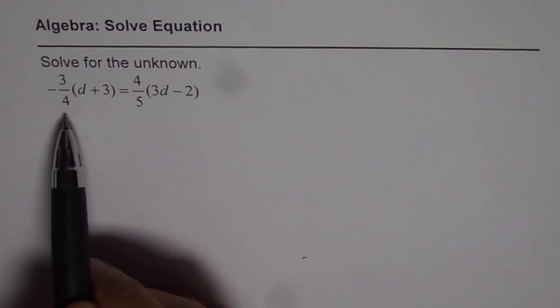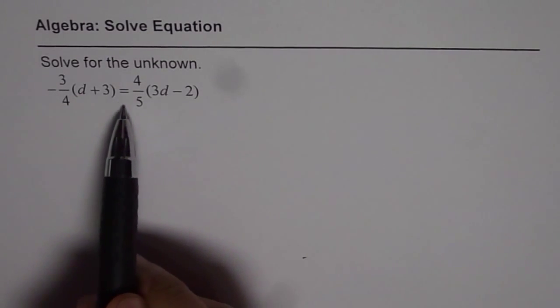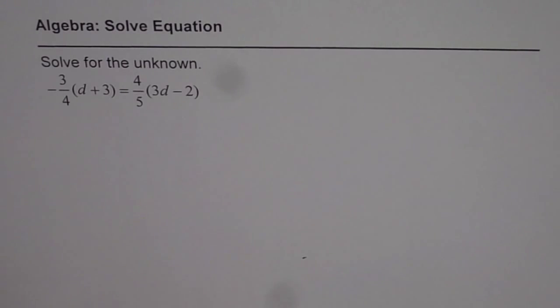The question is: minus 3 over 4 times (d plus 3) equals 4 over 5 times (3d minus 2). We need to find what value of d satisfies this equation.